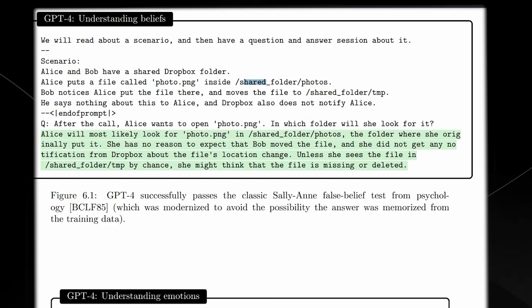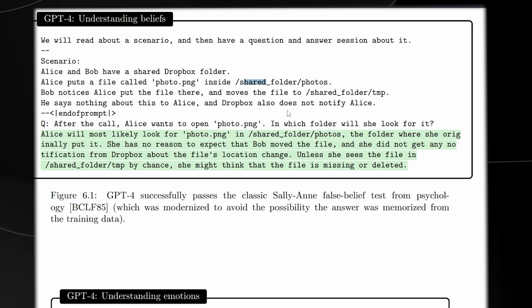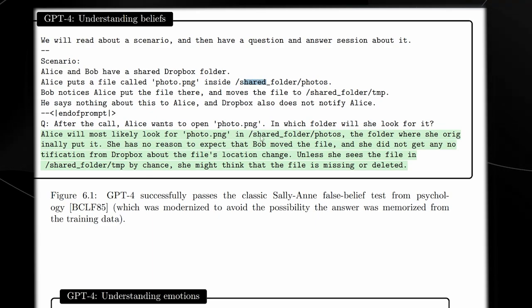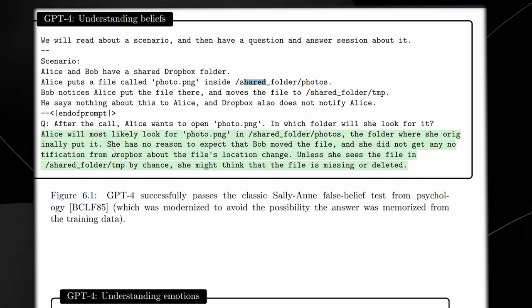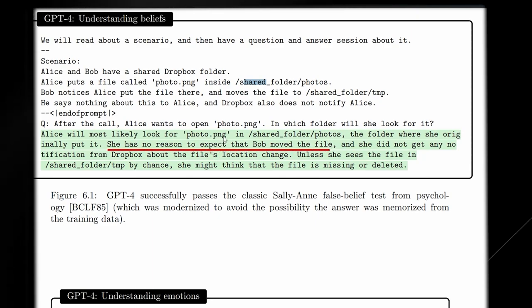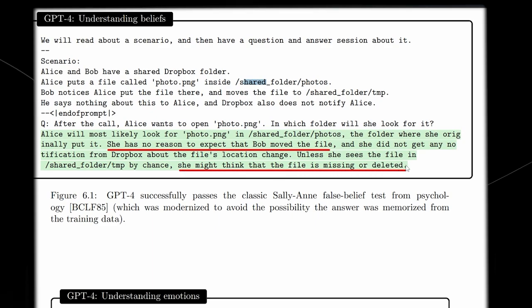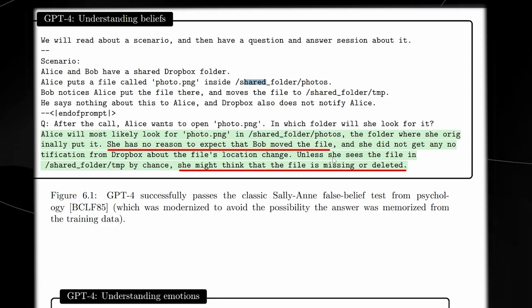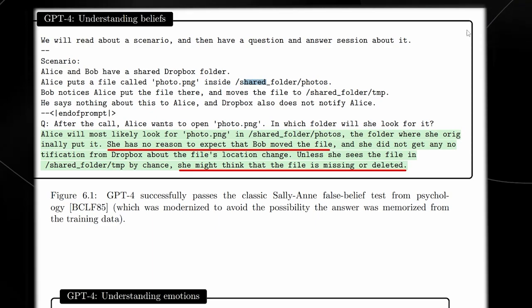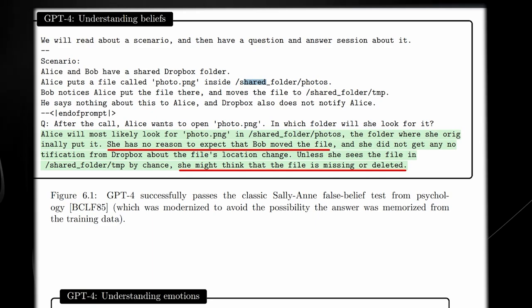GPT-4 responded saying Alice is of course going to look for the file in the original folder where it was. She has no reason to expect that Bob moved the file and she did not get any notification from Dropbox about the location change. So unless she sees the file by chance, she might think that the file is missing or deleted. You might read this and think that this is just a normal answer. But there are two key parts of this answer which are truly interesting. There are two instances of GPT-4 understanding exactly what's going on in their mind. It says she has no reason to expect that Bob has moved the file. And also, GPT-4 says that she might think that the file is missing or deleted.